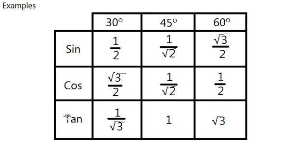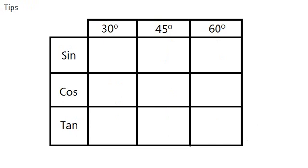Tangent is 1 over root 3, then 1, then root 3. So that's all the values in the table. It is important for you to learn these angles. There are actually much easier methods to remember this — hopefully you noticed that tip, because this is my tip for remembering every single thing about special angles.